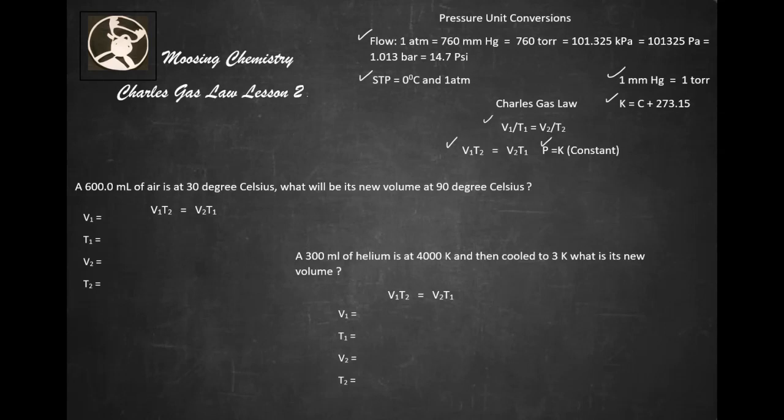Here we go. We have 600 milliliters of air at 30 degrees Celsius, so there's our first volume. Our temperature is 30 degrees Celsius, which won't work because we need Kelvin. We're looking for the new volume at 90 degrees Celsius. The first thing I want to do is convert to Celsius, so K equals C plus 273.15.